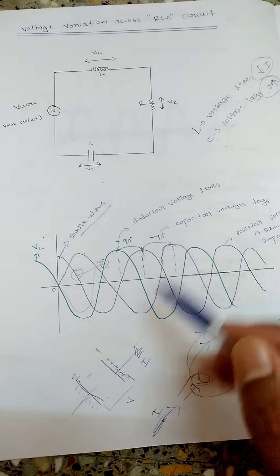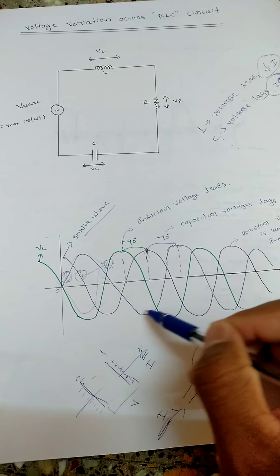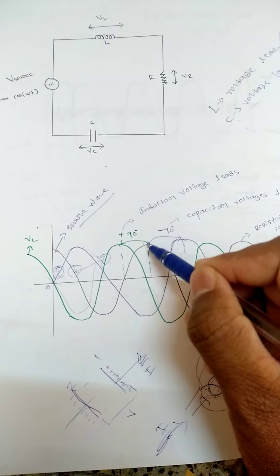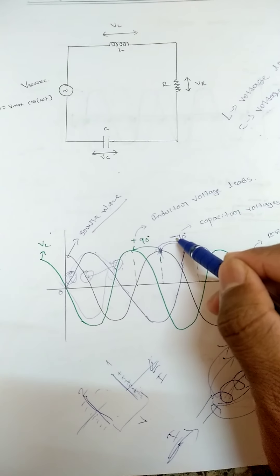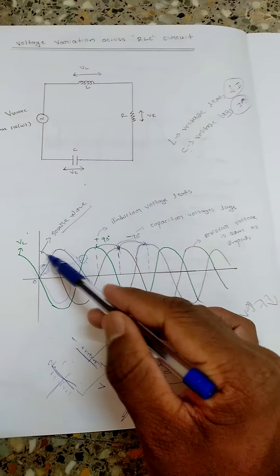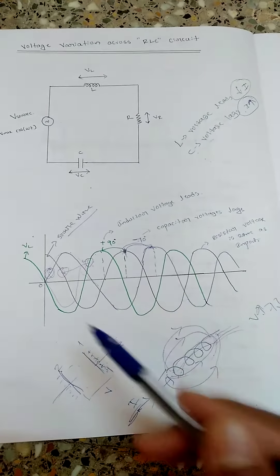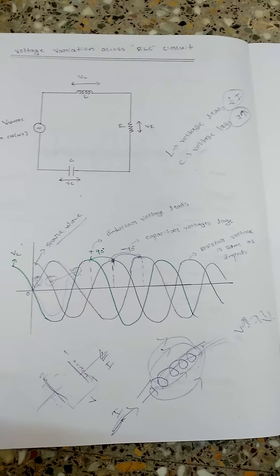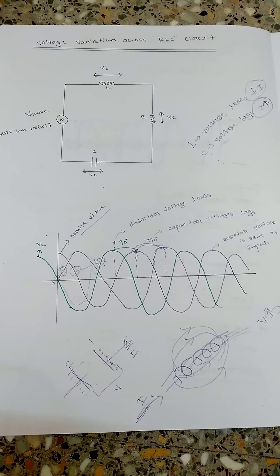For the capacitor, the voltage should lag, so I draw it starting from zero and it comes up later — the capacitor voltage is clearly lagging. So the source is the main wave; the inductor voltage leads by 90 degrees and the capacitor voltage lags by 90 degrees. With these three components and basic understanding, we can visualize the voltage lead and lag concept in a series RLC circuit.